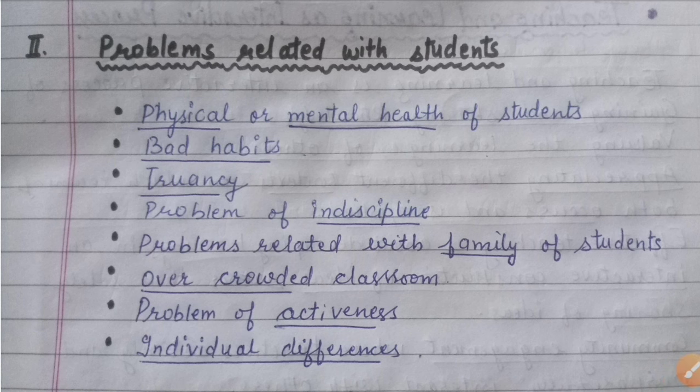Truancy means children leave or remain absent from school without permission. If children keep running around and are not in class, how will classroom learning happen? The next point is the problem of indiscipline. Some children are not disciplined in class or in school, and they create problems for everyone in the classroom.